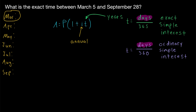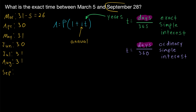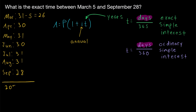So how many days are we counting for March 5th to September 28th? We count from the 5th of March to the end, not including the 5th: 31 minus 5 equals 26 days in March. Then April has 30, May has 31, June has 30, July and August both have 31, and we count 28 days in September. Adding all these up gives us the exact time of 207 days between March 5th and September 28th, counting the 28th but not March 5th.